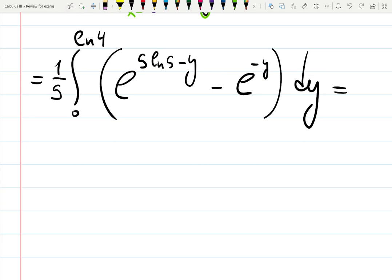Maybe let's simplify a little bit. I would write down this function inside. We could then actually integrate right away, but if you want to, I would think that this can be written as e to the 5ln5 times e to the minus y, right?